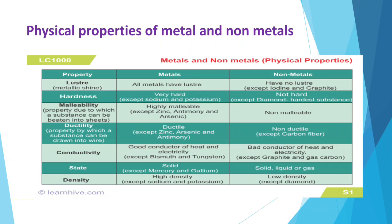This slide gives a comparison of the physical properties of metals and non-metals. The first property we are going to discuss is luster — metallic shine. All metals have shine, as you have seen in the previous slide. Gold has a golden yellow colour, platinum a silvery colour, and copper is reddish brown in colour. On the other hand, non-metals do not have any kind of luster.